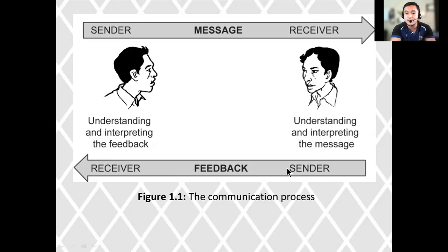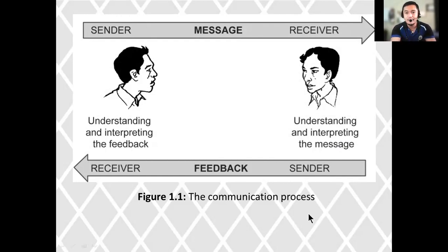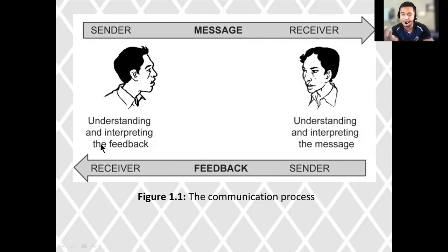The receiver now understands and interprets the message, and then the receiver becomes the sender — there is a switch of roles. The receiver interprets the message and then becomes the sender by giving feedback to the original sender. The receiver now becomes the sender of a reply to the original message. There is feedback, and the original sender becomes the receiver of the feedback from the other party.